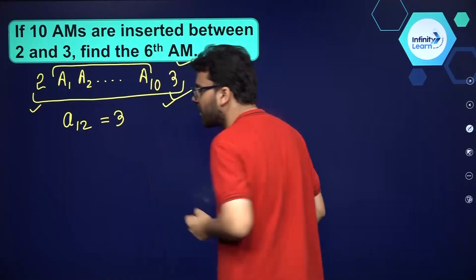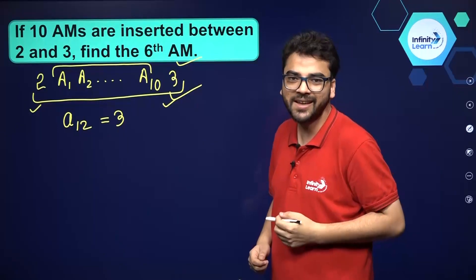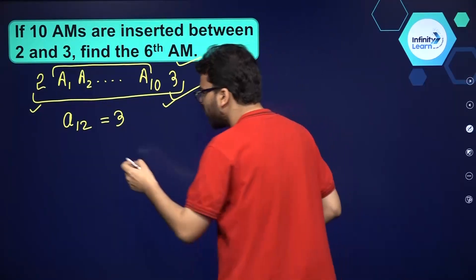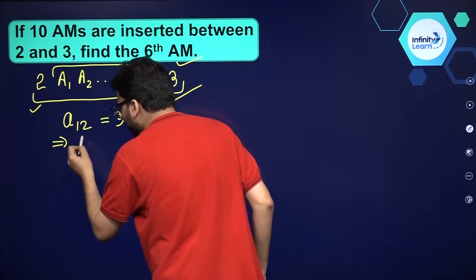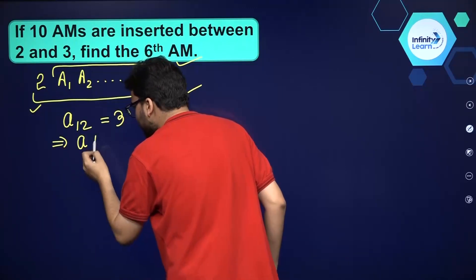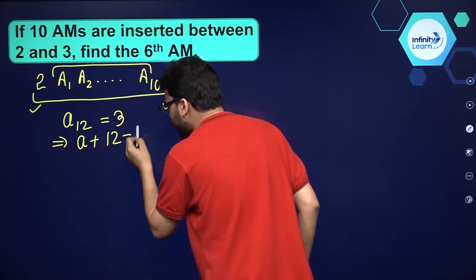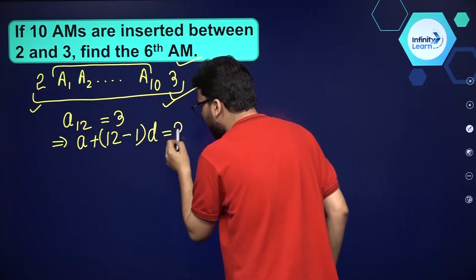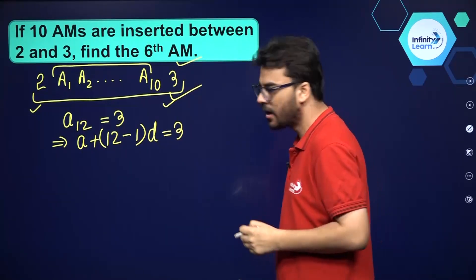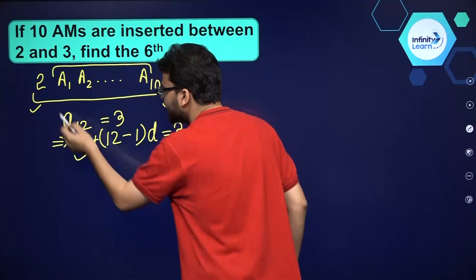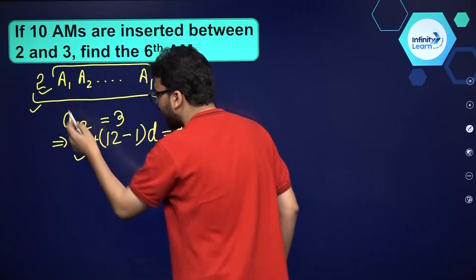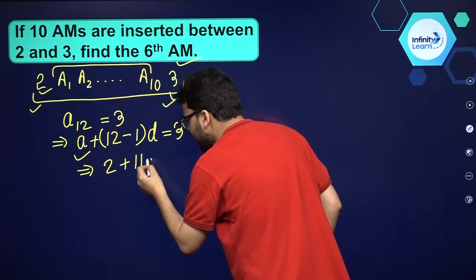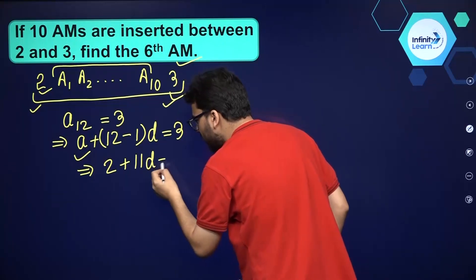Now what is the formula to find the nth term of an AP? That is A plus N minus 1 into D. So A12 will be A plus 12 minus 1 into D. D is the common difference which we do not know, and that is equal to 3. Now A is the first term, that is 2. So this is 2 plus 11D, and that is equal to 3.